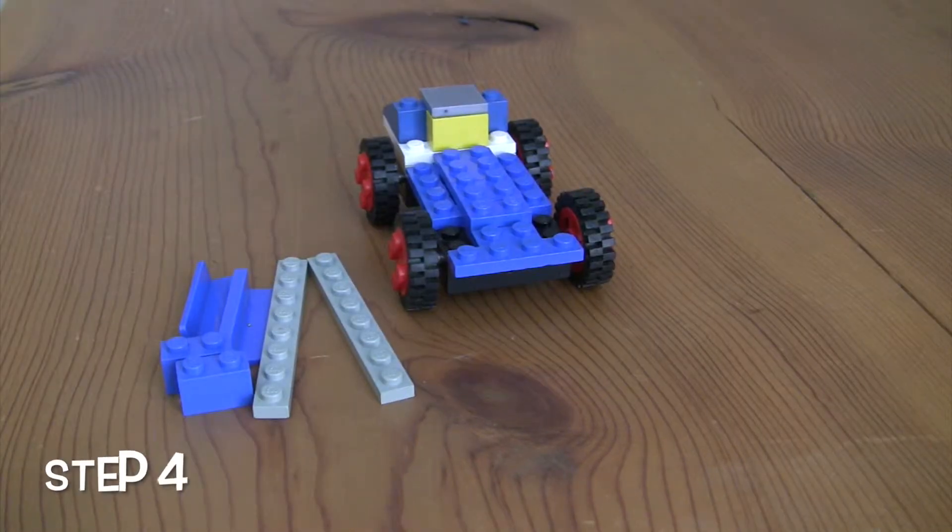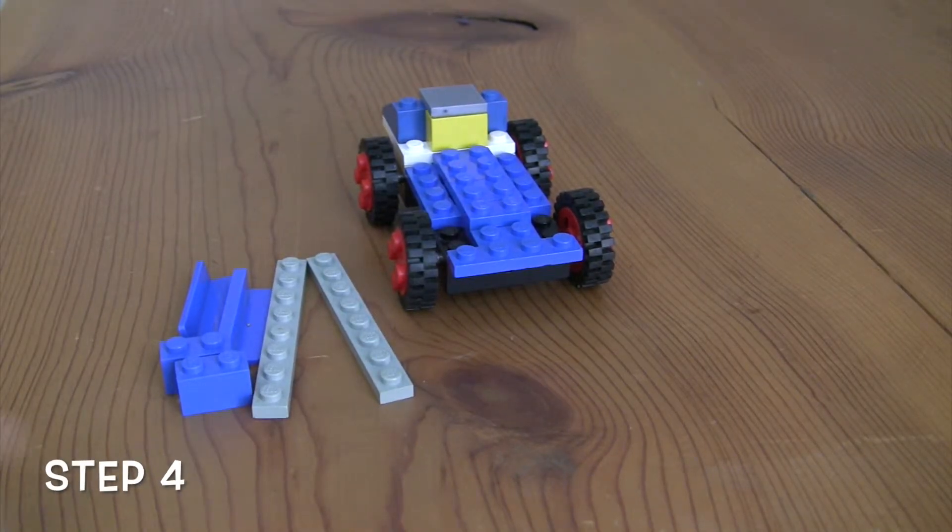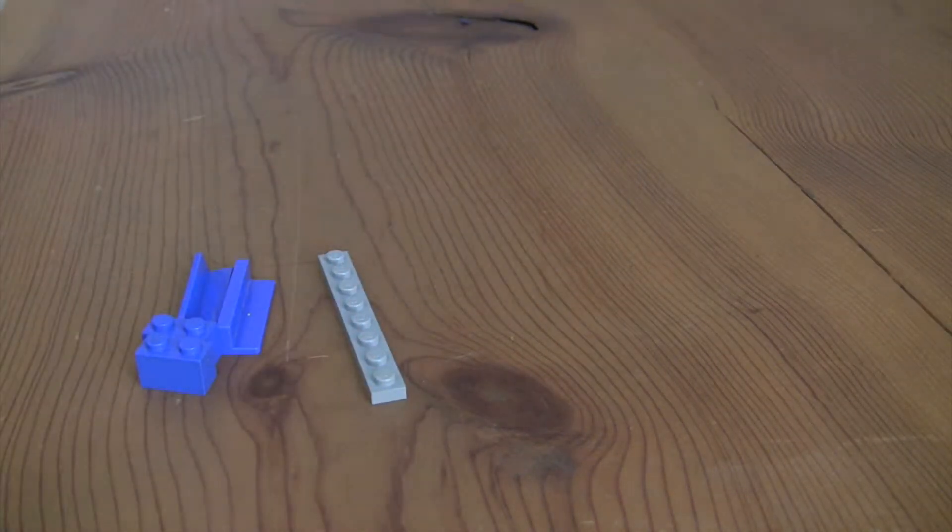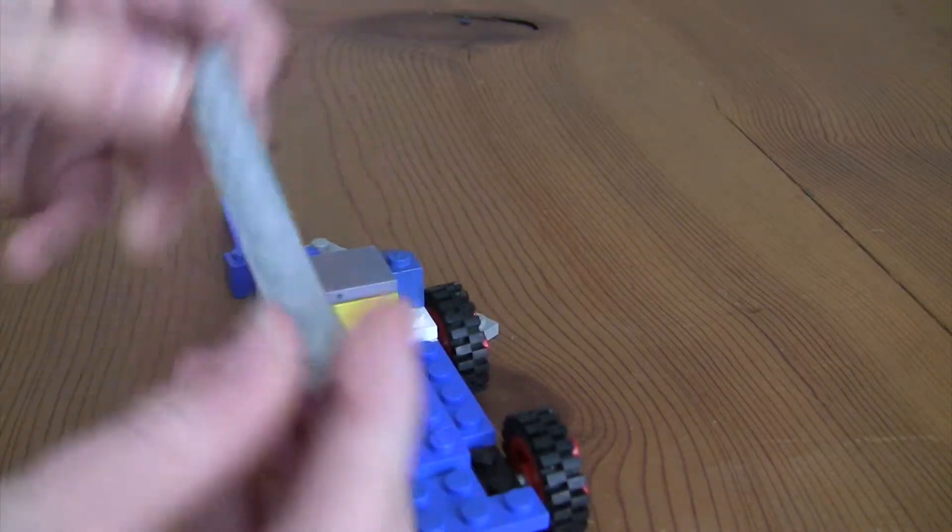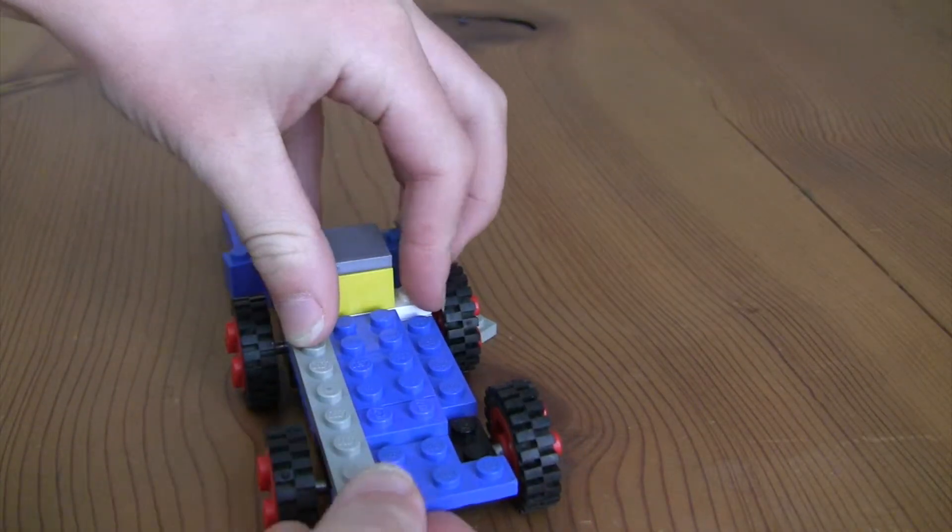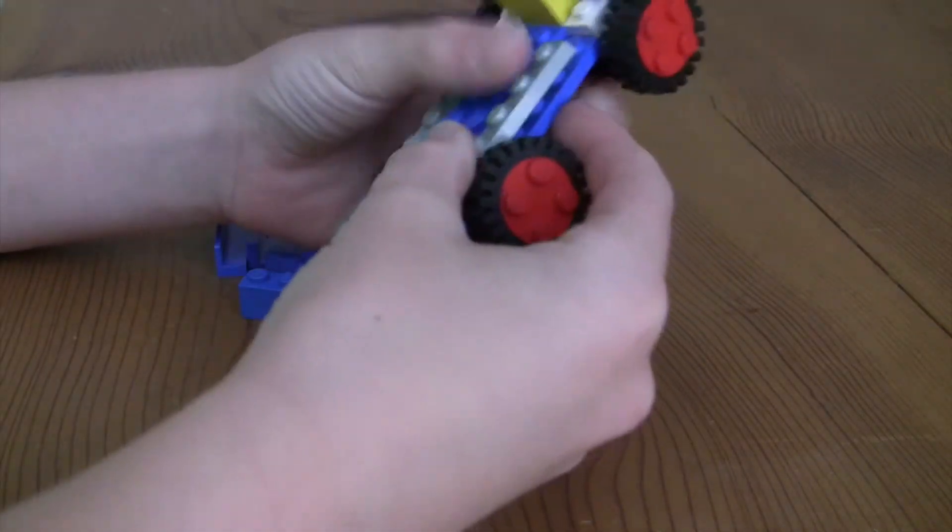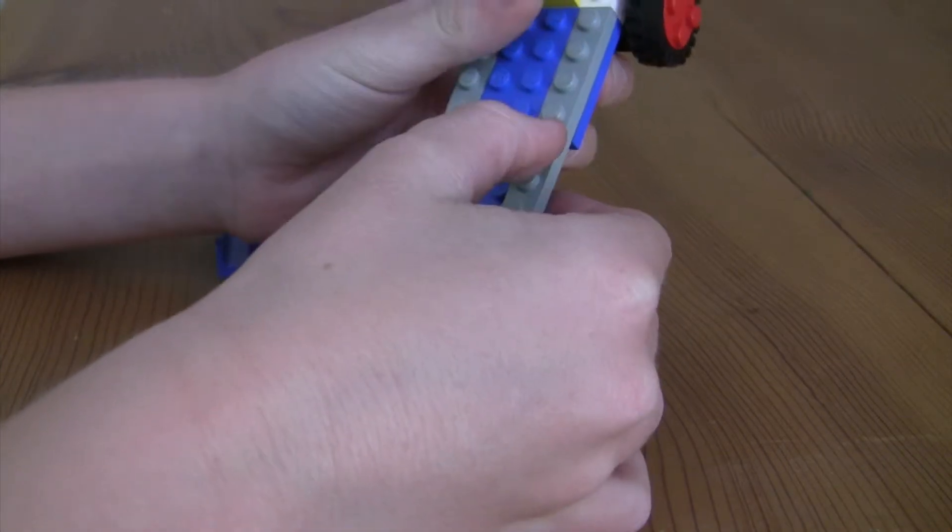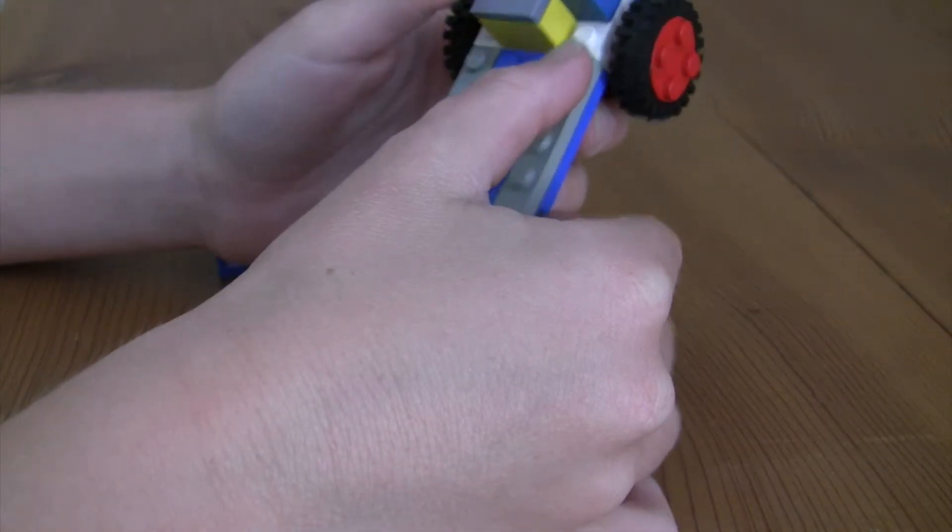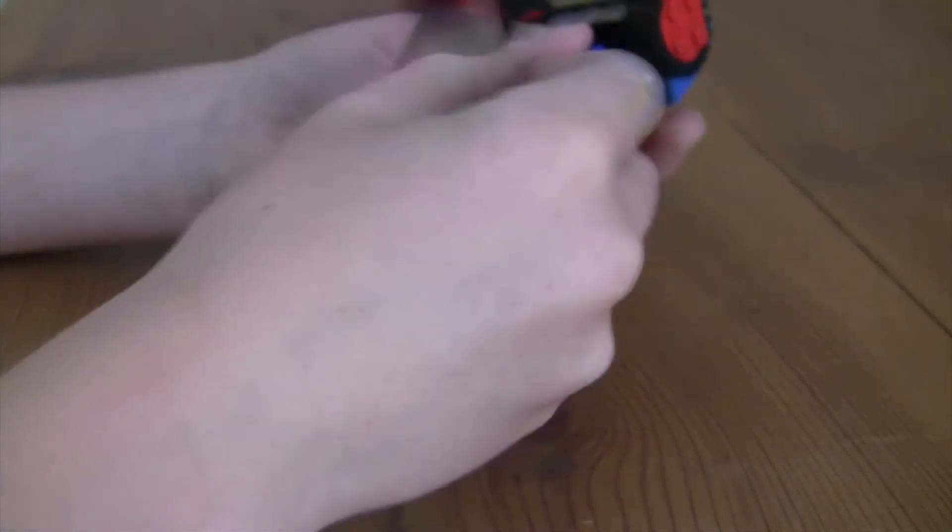And now what you're going to do is you're just going to take this piece, place it right here. Another one, this right there. And this is a 1x1, a 1x8. There's 4. There.